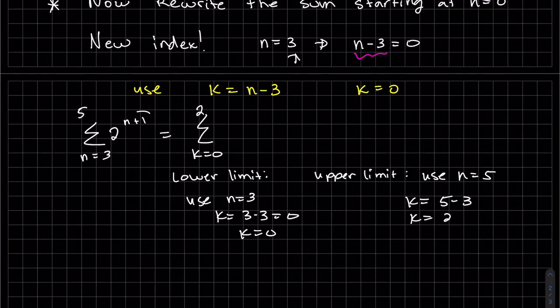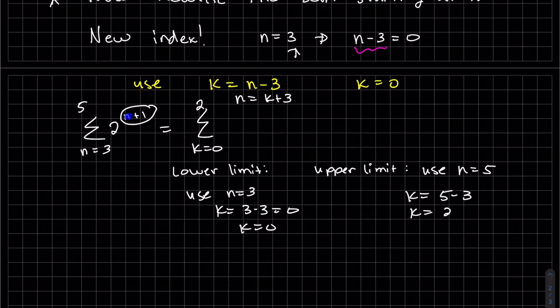Now for this, we need our counter of k. So we can use this. Instead of n, we can take that equation and solve for n. And replace n here with k plus 3. So instead of n, it's k plus 3 plus 1.